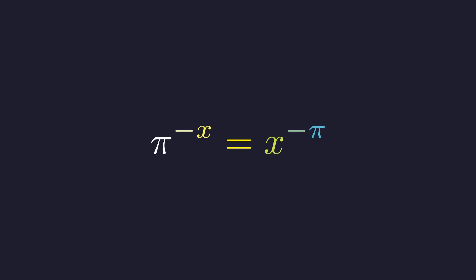Here's a banger equation that looks deceptively simple: π to the power of negative x equals x to the power of negative π. At first glance you might think there's just one obvious solution, but here's the twist—this equation has exactly two real solutions. Finding both of them takes us on a journey through logarithms, calculus, and a powerful numerical method.